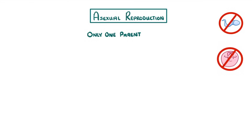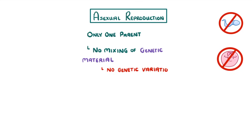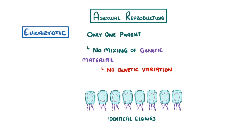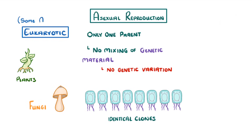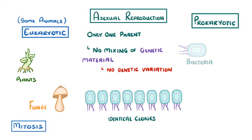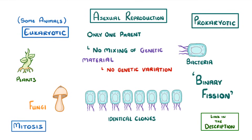Asexual reproduction, meanwhile, takes place with only one parent and doesn't involve any gametes. This means there's no mixing of genetic material, and so no genetic variation, which means all of the offspring are identical clones. For eukaryotic organisms such as plants, fungi, and a few animals, this asexual reproduction is achieved through mitosis. While prokaryotic organisms, such as bacteria, do it by binary fission. We've covered mitosis and binary fission in other videos, and we'll put the links to those in the description below.